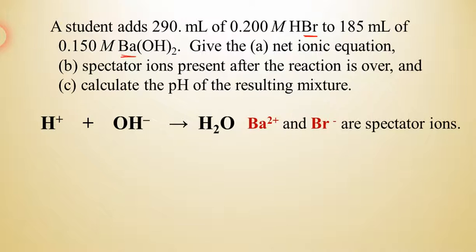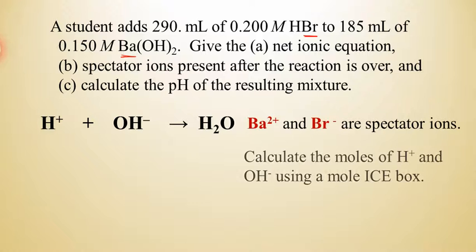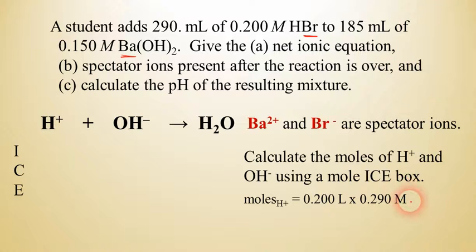Now, the last part, the pH, we have to go about this using the same method we did before. We're going to make an ICE box with the moles this time. So I'm going to set that up here. The moles of hydrogen ions of acid will be 0.29 liters times 0.2 molar. So when we multiply that out on our calculator, we get about 0.058 moles when you compute that. And then we do the same thing for hydroxide.